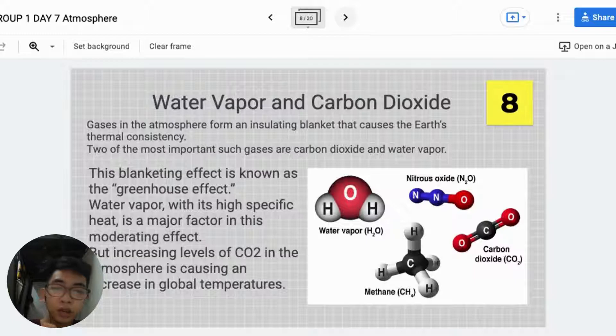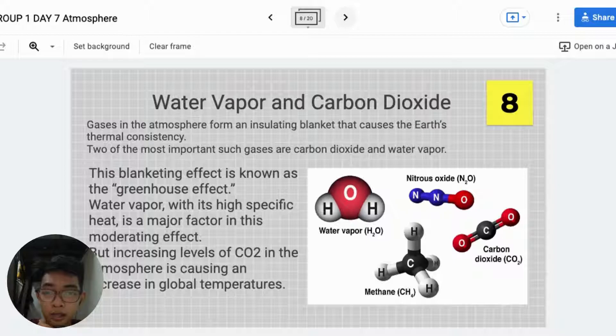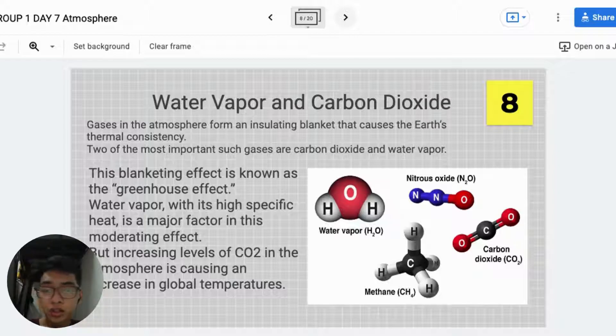Water Vapor and Carbon Dioxide. Gases in the atmosphere form an insulating blanket that causes the Earth's thermal consistency. Two of the most important gases are carbon dioxide and water vapor.